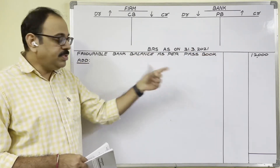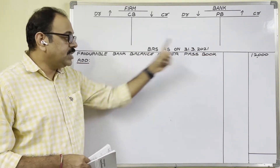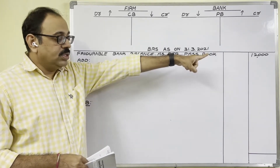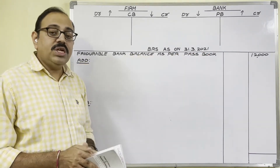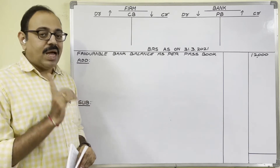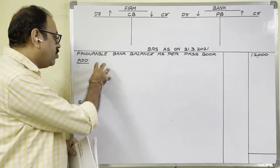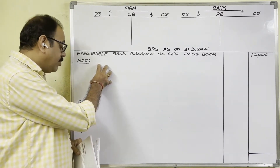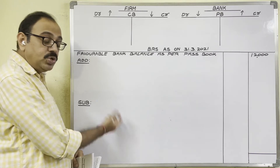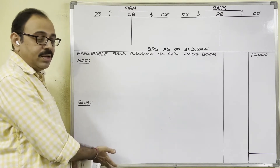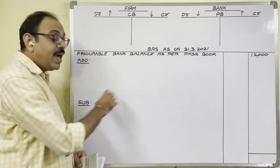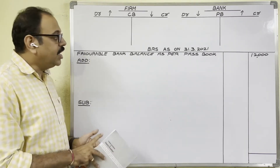The columns are: Particulars, Amount, Amount. To that amount, the question gives some reasons for disagreement. Some reasons we have to add, some we have to subtract, and then we calculate the bank balance as per cashbook.